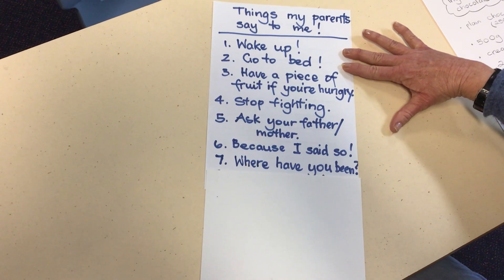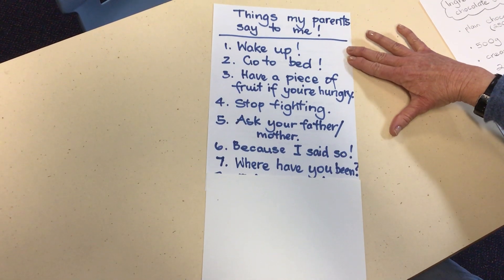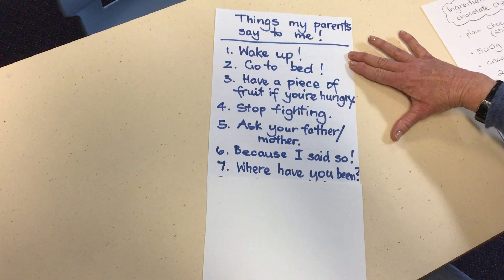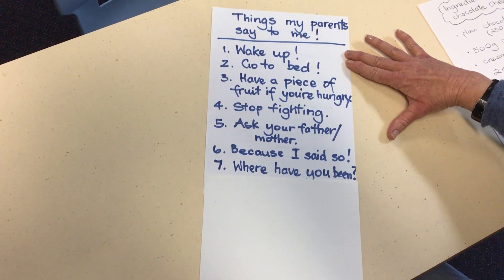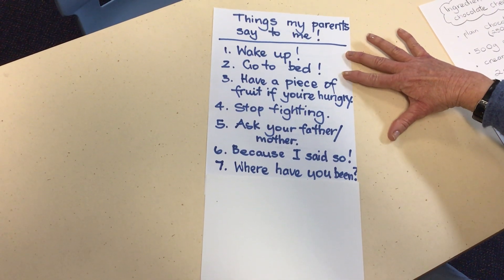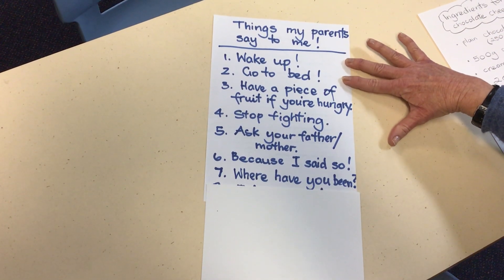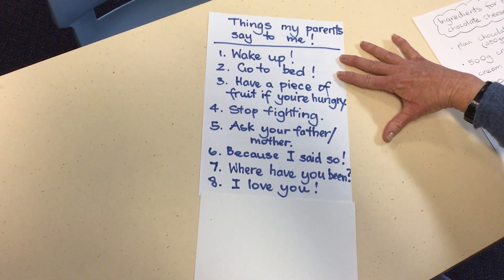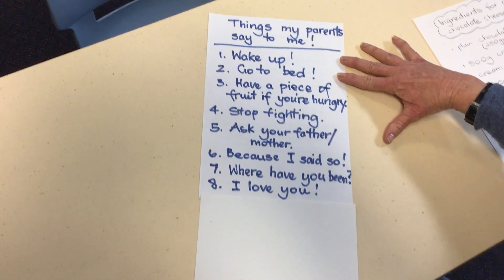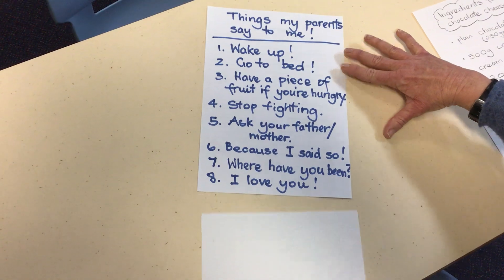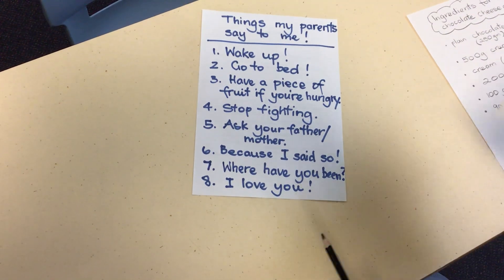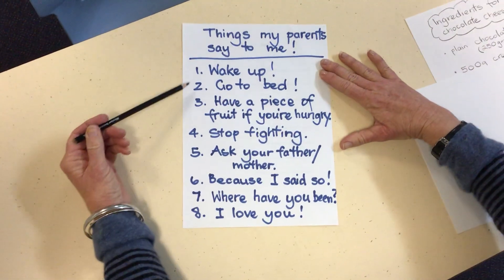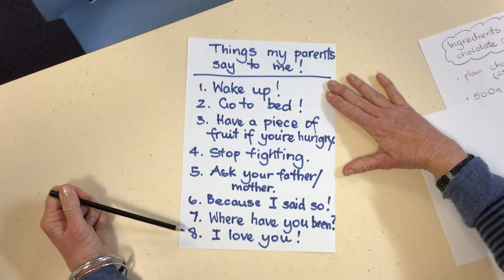Number seven: sometimes when I got home they would ask, 'Where have you been?' And finally, they would always say to me, 'I love you.' As you can see with this list, I've used numbers.